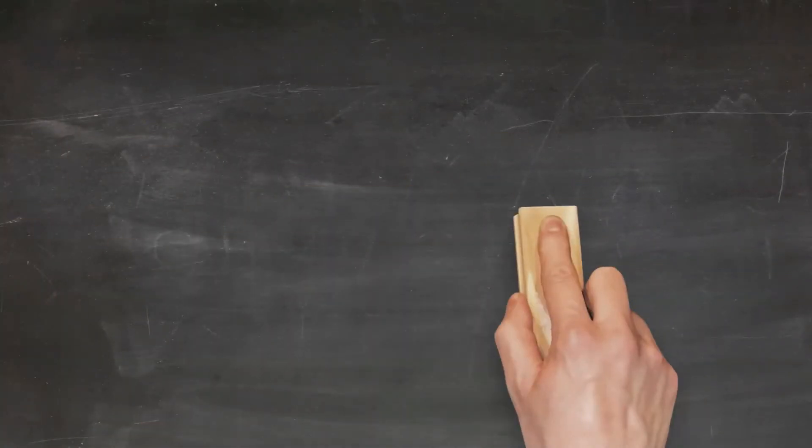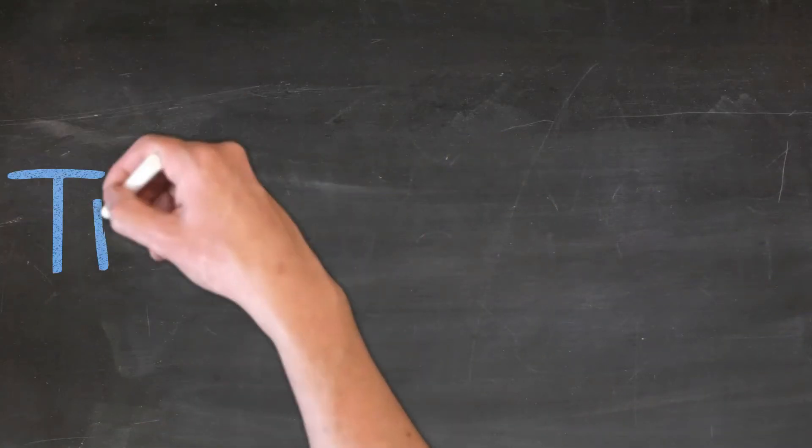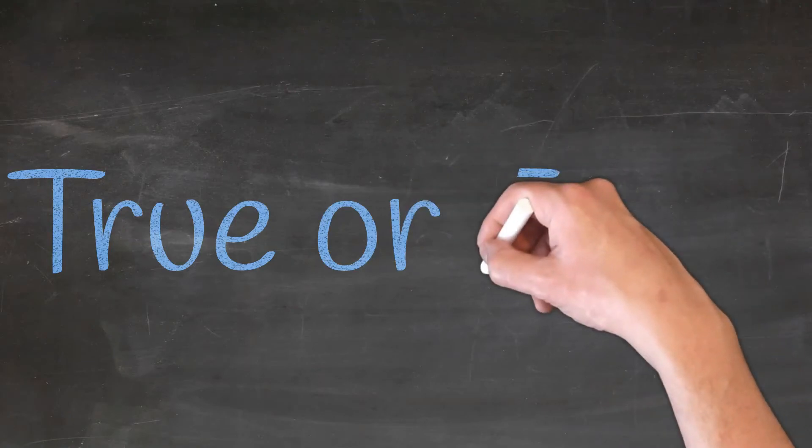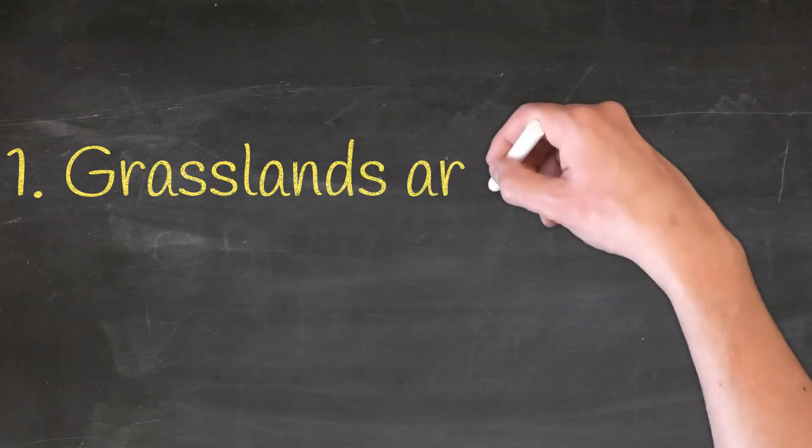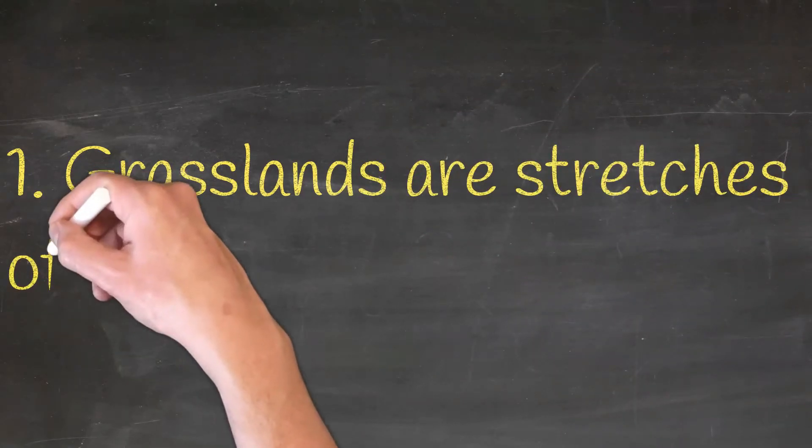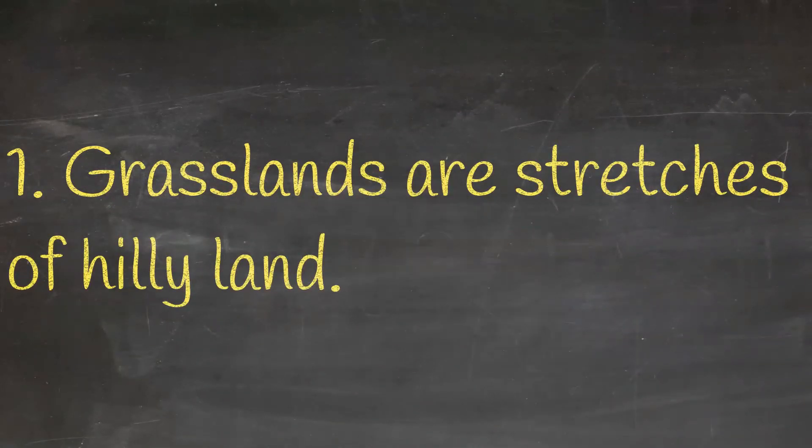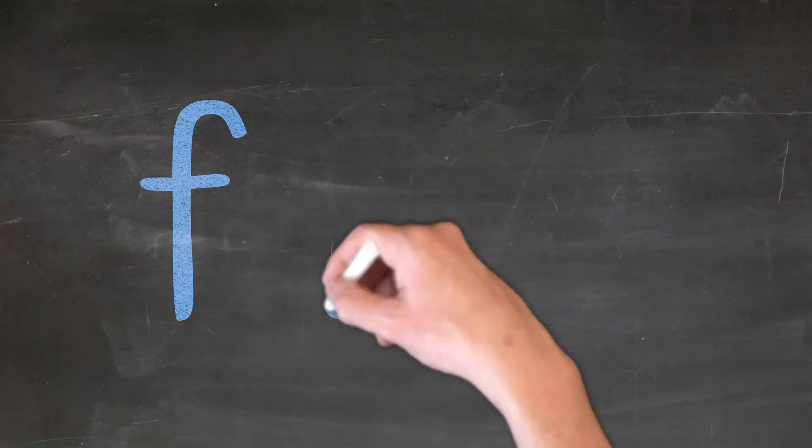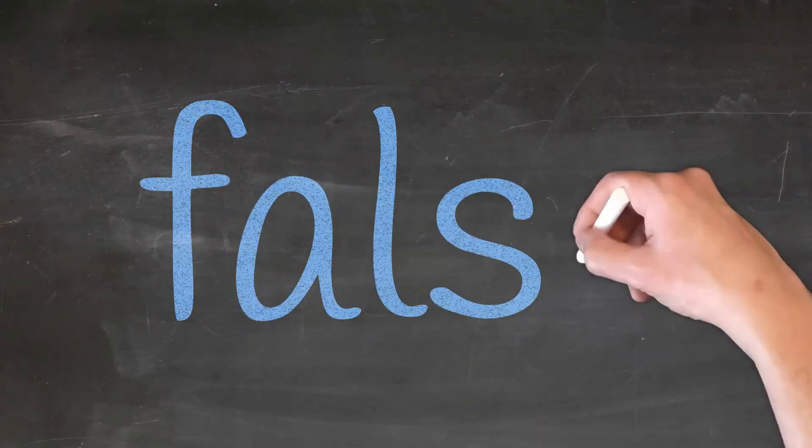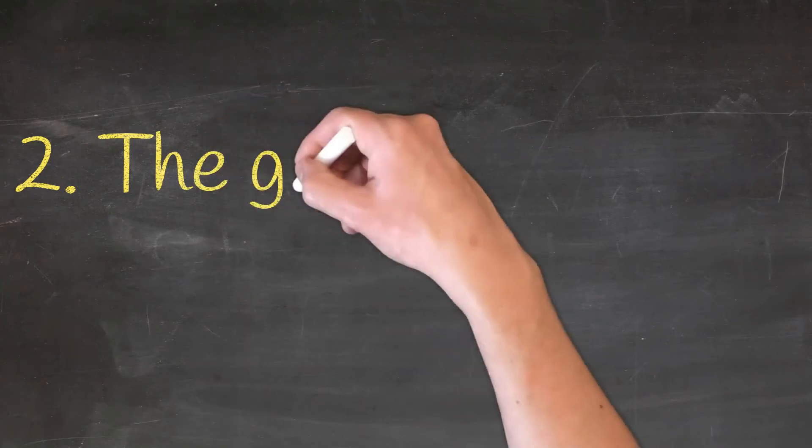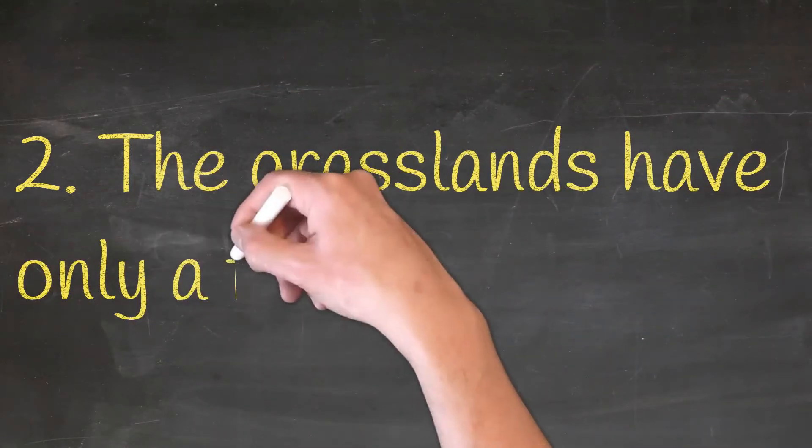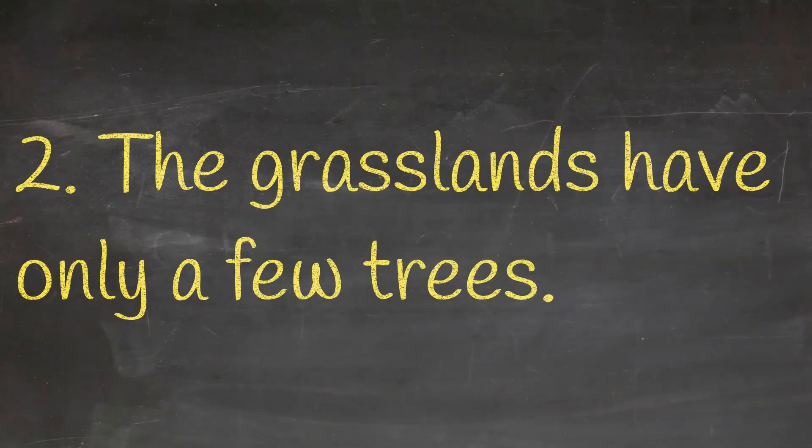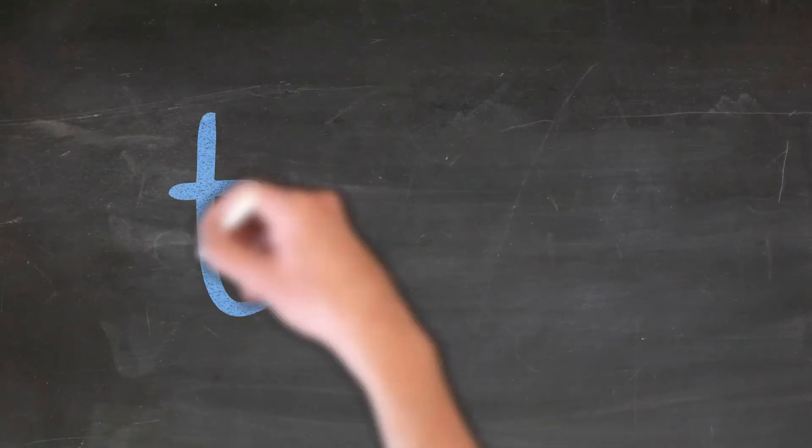Now let's move towards true or false. Grasslands are stretches of hilly land. This statement is false. The grasslands have only a few trees. And it's true.